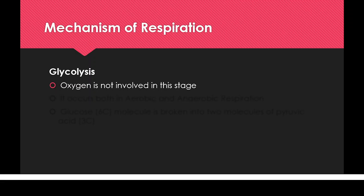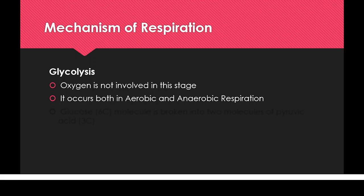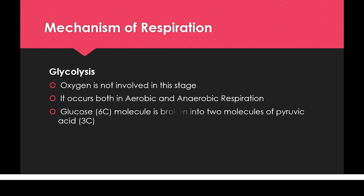In glycolysis, the glucose molecule will convert into carbon dioxide, water, and energy in the form of ATP. Oxygen is not directly involved in this step. Glycolysis occurs in both aerobic and anaerobic respiration, because in both cases glucose breaks down the same way. The 6-carbon glucose molecule breaks down into two 3-carbon pyruvic acid molecules.